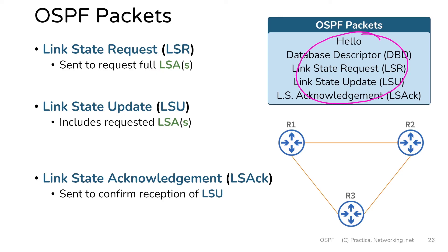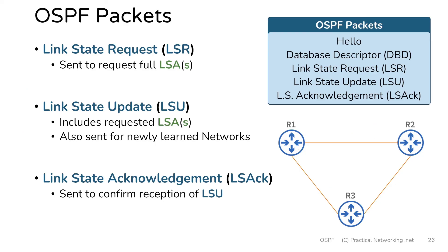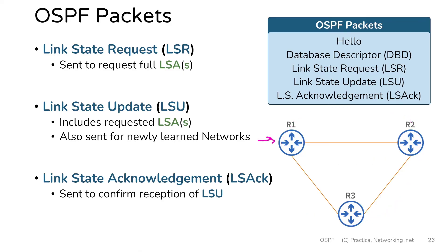All five of these packets will be involved every time a new neighbor adjacency is formed. But if router 1 and router 2 have already become adjacent and router 1 then learns of a new network, router 1 will simply send a link state update to its neighbors with information about that new network. Since OSPF is a link state protocol, all routers know everything the other routers know, so router 1 already knows whether router 2 and router 3 need that information. When routers who are already neighbors learn something new, only the link state update and link state acknowledgement are involved.